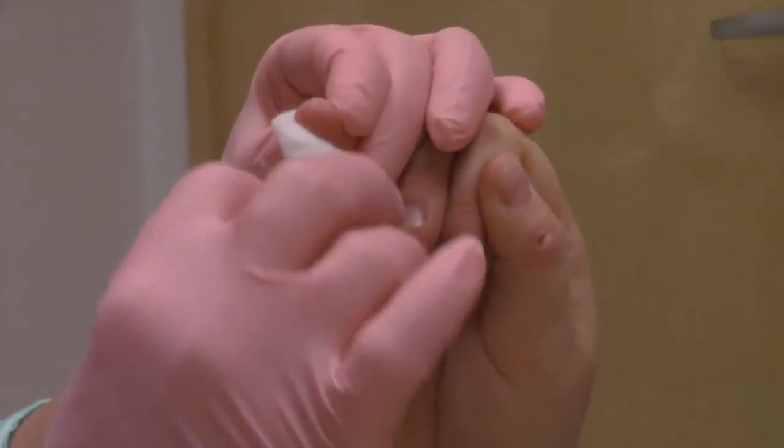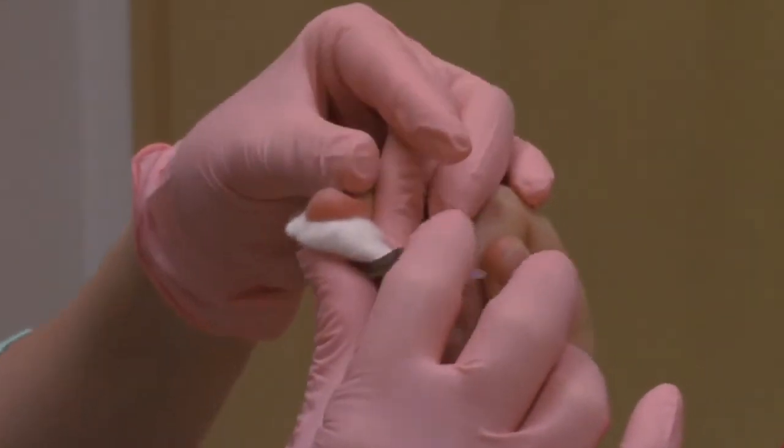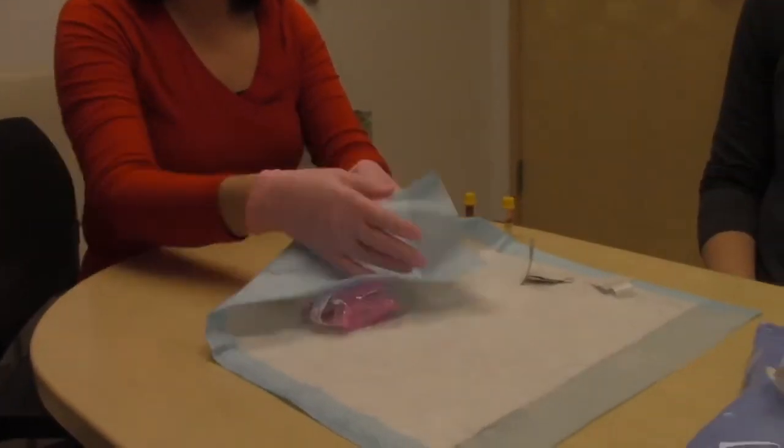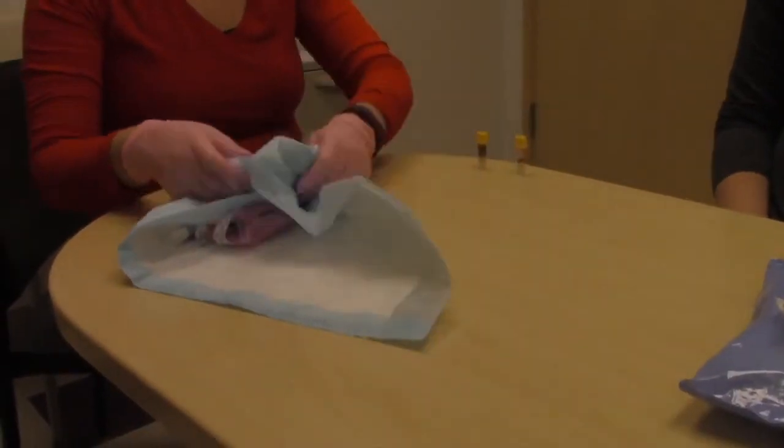When you are done collecting the sample clean the fingertip then place the cotton ball and band-aid on the finger. You can throw all of the supplies from the finger poke in the regular trash.